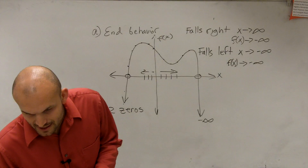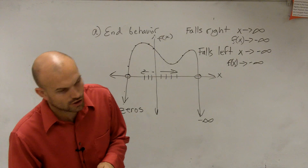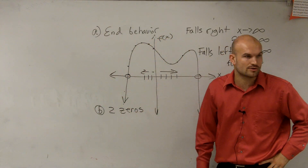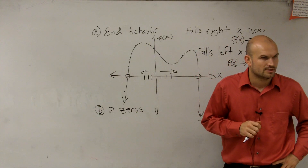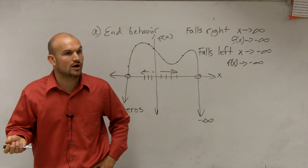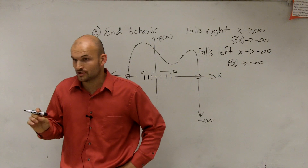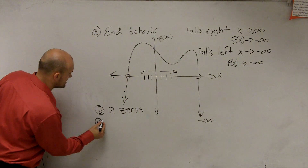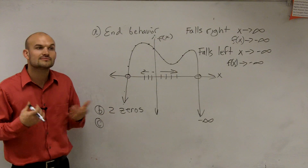For part C, determine whether the graph represents an odd degree or even degree polynomial function. We have two zeros. When you have an even degree function, you'll always have an even number of zeros, or none at all. When you have an odd degree function, you'll always have an odd number of zeros. Since we have two zeros, it's an even degree function.